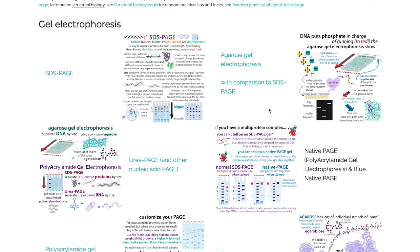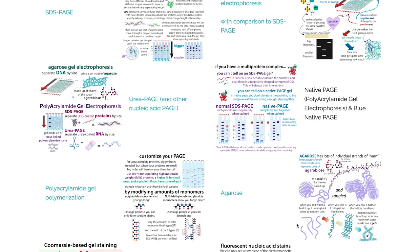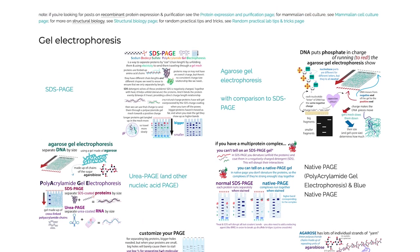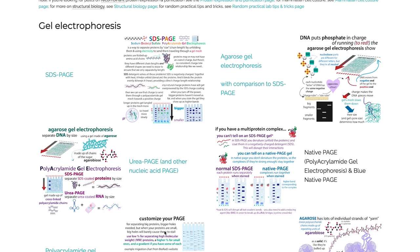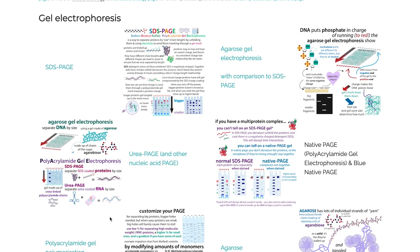Agarose gels are often used for big pieces of DNA and RNA. PAGE gels — polyacrylamide gels — are often used for proteins as well as small RNA and DNA fragments. These gels allow us to separate molecules; a gel is basically a mesh filled with liquid, and we send molecules through using electricity — hence gel electrophoresis.